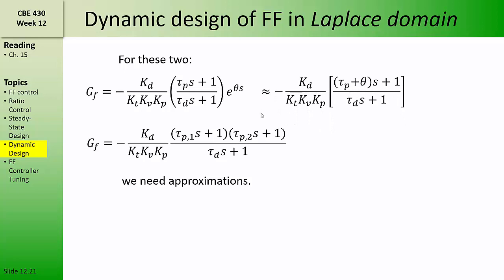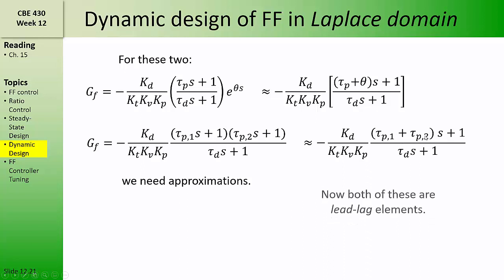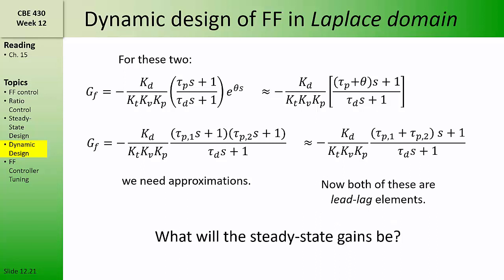For example, in the case where we have the opposite of a time delay, we can simply add theta to tau p and make that a larger time constant in the numerator. Similarly, for the case where we've got the second-order numerator combined with the first-order denominator, we can just add the time constants. Now both of these are lead-lag elements. You can answer the question what the steady-state gain of the feedforward controller should be.